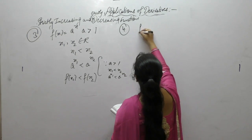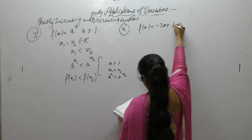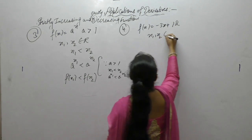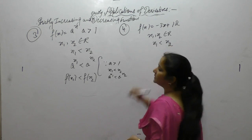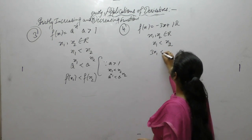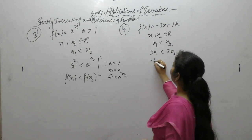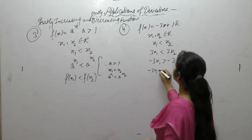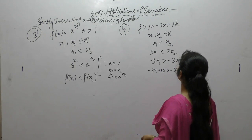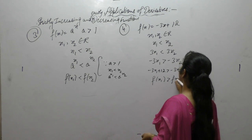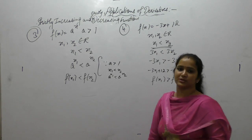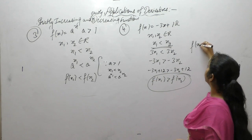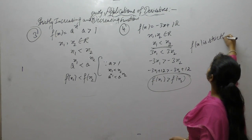Show that f(x) = -3x + 12 is strictly decreasing on ℝ. Let x₁, x₂ belong to ℝ with x₁ < x₂. Multiply by 3, then when we multiply by a negative sign the inequality sign will change. Now add 12 on both sides. We get f(x₁) > f(x₂). Since x₁ < x₂ but f(x₁) > f(x₂), therefore f(x) is strictly decreasing.